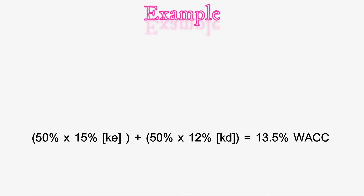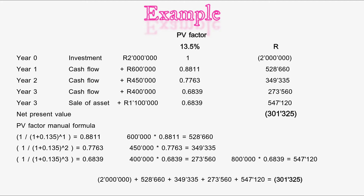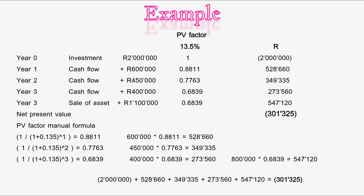Now we're going to look at whether the investment is worth it — is the two million rand investment in this dough mixer going to be worth it? We're going to use the WACC as the present value discount rate. Year zero is the initial investment of two million rand, which we multiply by one because the present value factor doesn't come into account yet, and we record it as a negative since it's money we're putting in, not money we're making.